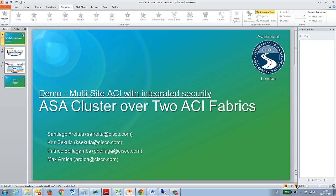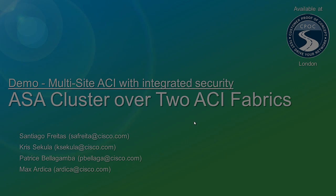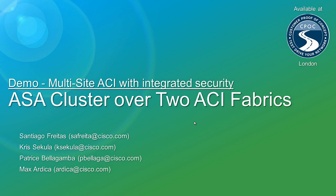Hello. During this demonstration, we're going to show you an ACI multi-site — meaning two ACI fabrics interconnected back-to-back with VPC — and then we're going to have an ASA cluster that is stretched across the two ACI fabrics.